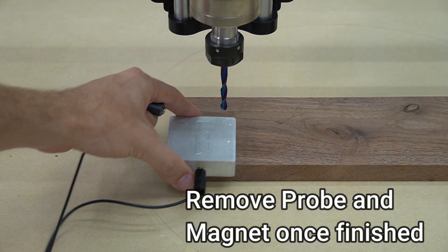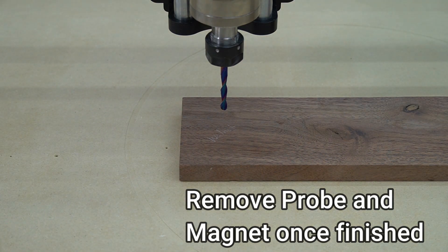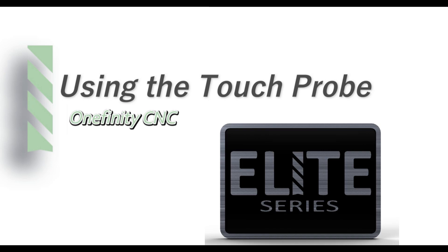Once we're done probing Z, we can remove the magnet and the probe from our workpiece, and we are good to go. This concludes using the touch probe with the Onefinity CNC Elite Series.